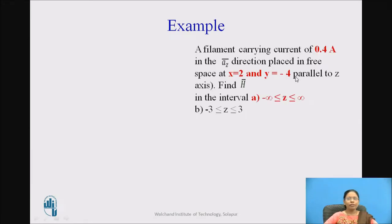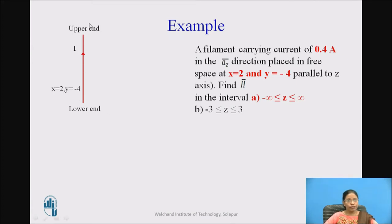For the same example, current is 0.4 amperes, filament placed at X equals 2, Y equals minus 4. We are now solving for the finite length filament, Z from minus 3 to plus 3. Consider the filament: it is now of finite length placed at X equals 2, Y equals minus 4, carrying current I, ranging from Z equals minus 3 to Z equals plus 3. The lower end is at Z equals minus 3 and the upper end is at Z equals plus 3, determined by the direction of current.